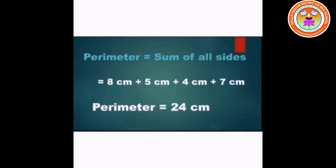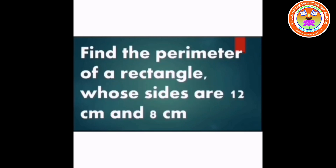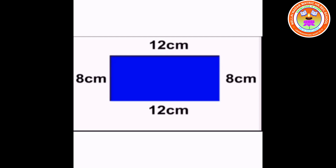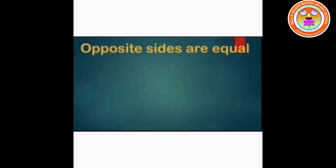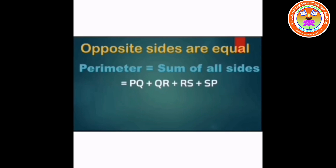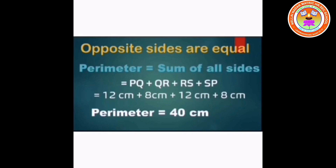Sum: Find the perimeter of a rectangle whose sides are 12 cm and 8 cm. This is a rectangle where opposite sides are equal. PQ is 12 cm, QR is 8 cm, RS is 12 cm, and SP is 8 cm. Perimeter equals PQ plus QR plus RS plus SP. Perimeter is equal to 40 cm.